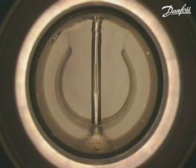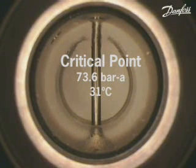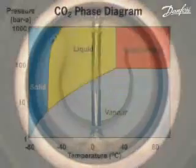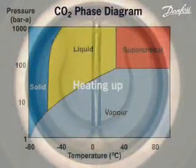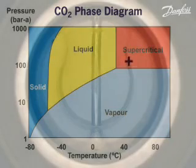CO2 now exists at a pressure of 73.6 bar absolute and a temperature of 31 degrees C. After a further small increase in temperature, all the CO2 present in the cell is now in the supercritical phase.